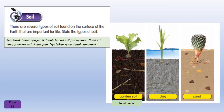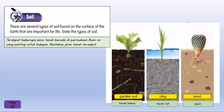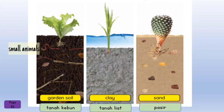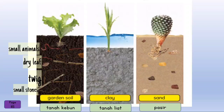Garden soil — Tanah kebun. Garden soil contains small animals (binatang kecil), dry leaves (daun kering), twigs (ranting), and small stones (batu kecil).